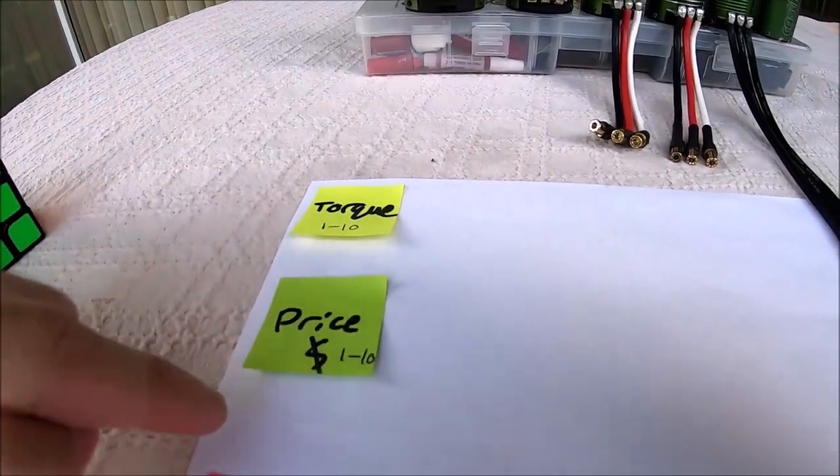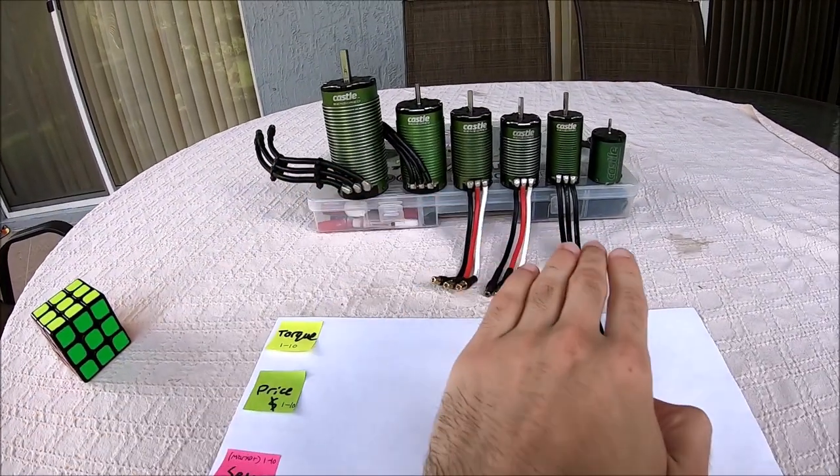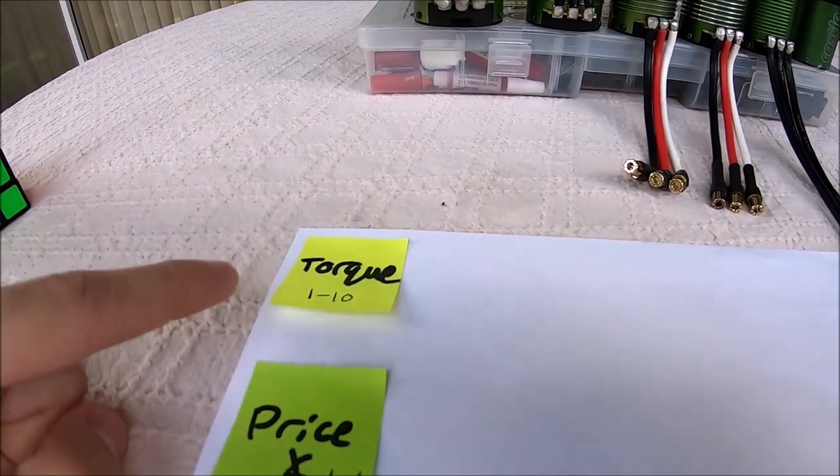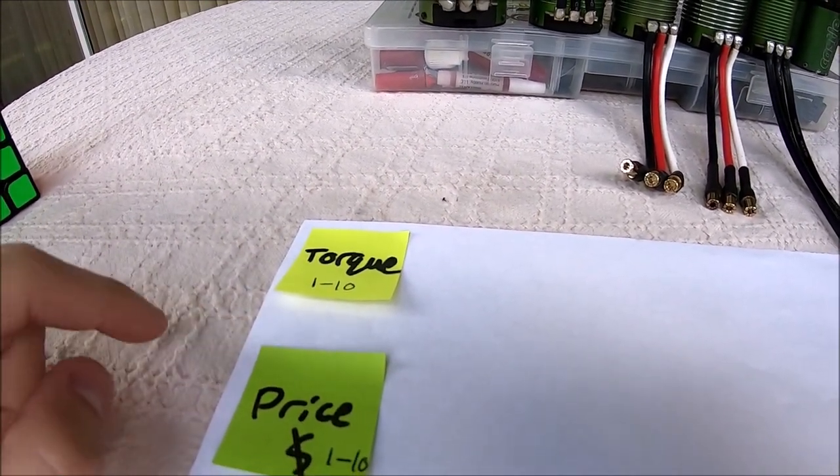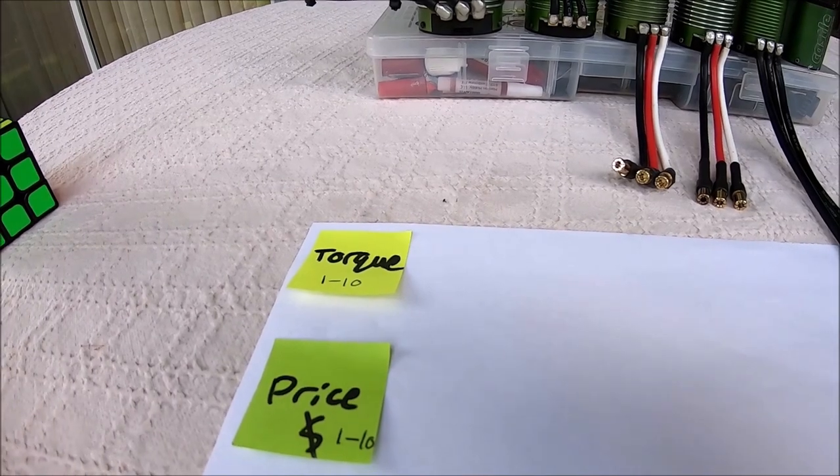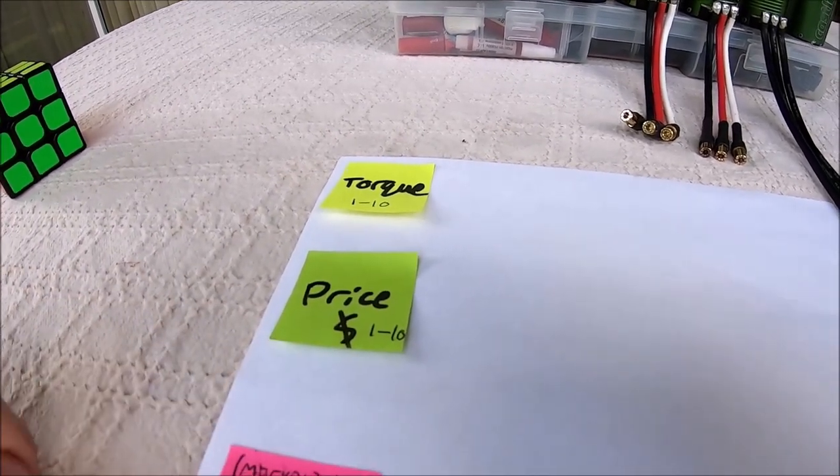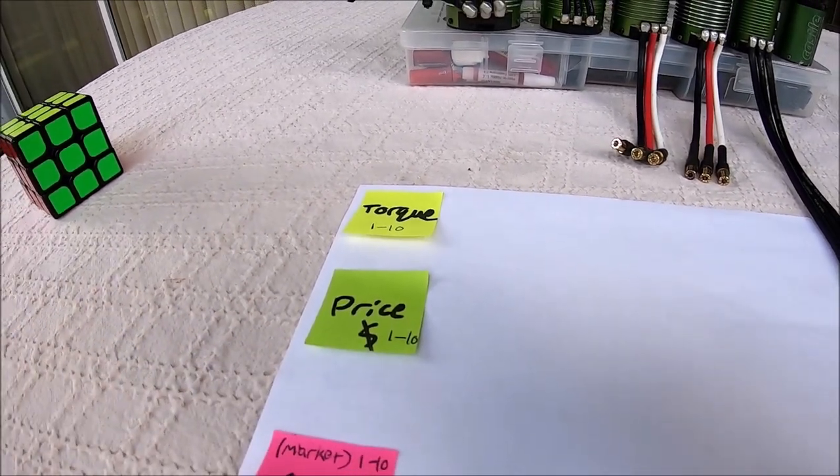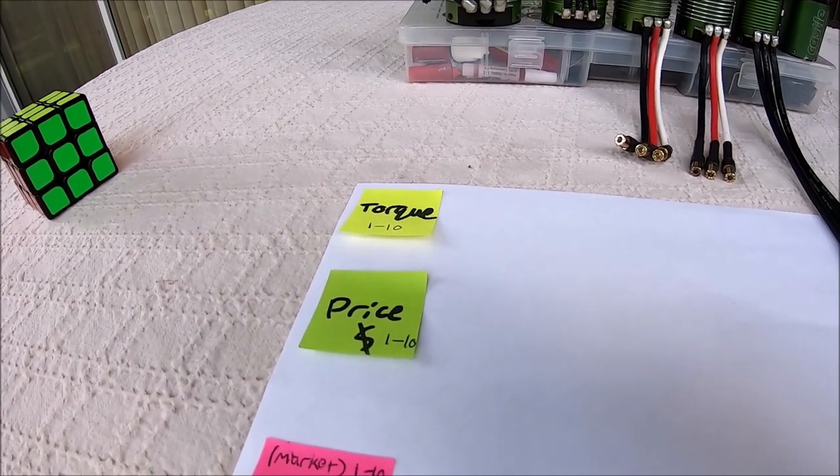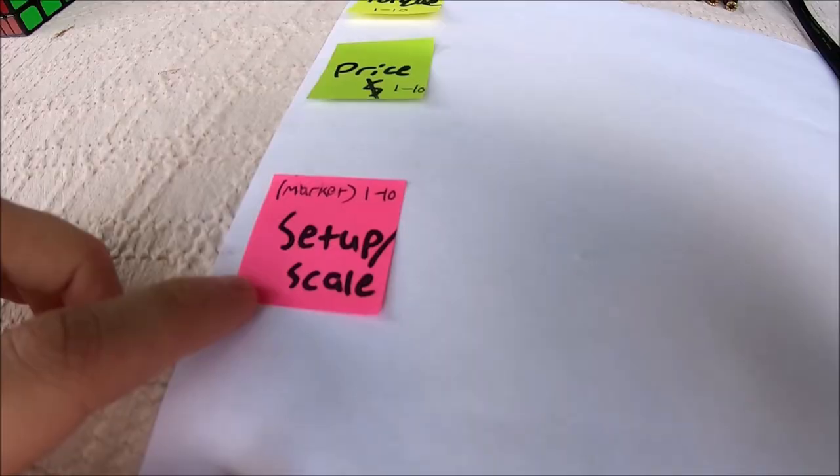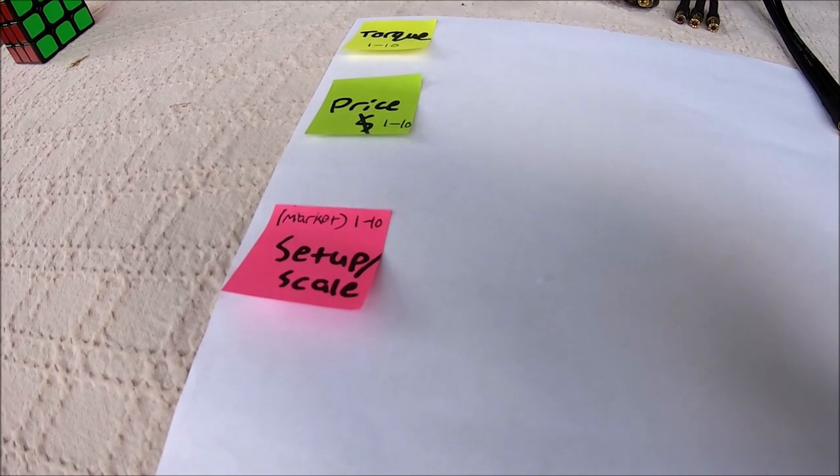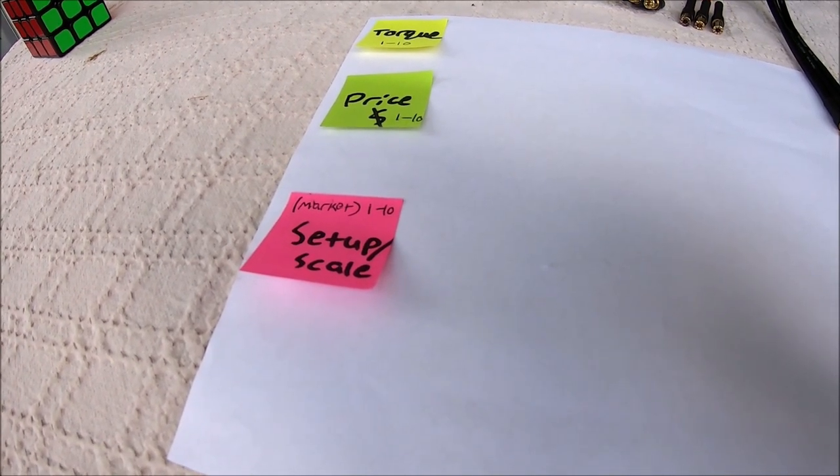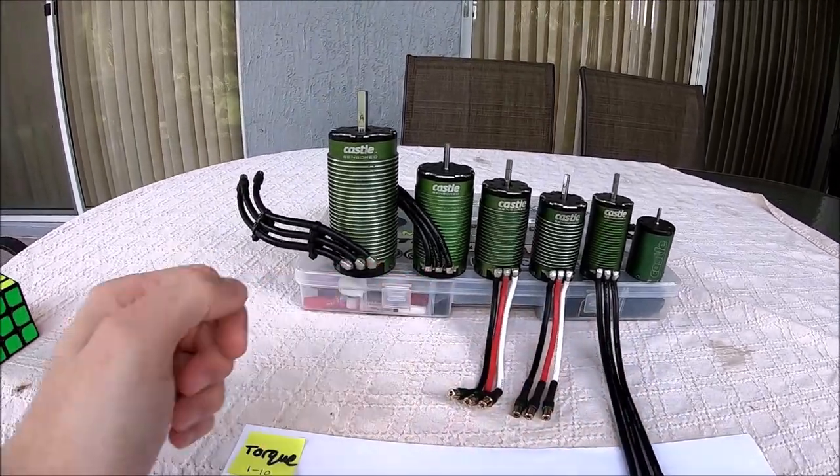Each of these categories will be defined per motor. We're rating each motor on torque, one to ten, ten being the most torque, one being nothing. Price, one to ten, pretty much if you're paying $200 for a motor, are you going to be getting that performance back? Setup and scale is definitely one to explain.